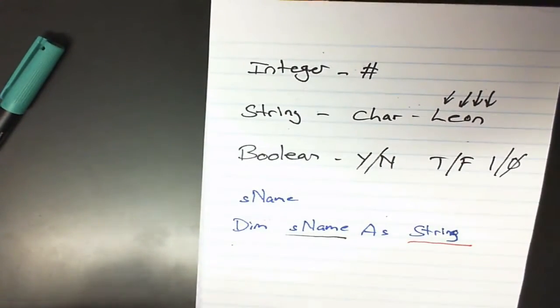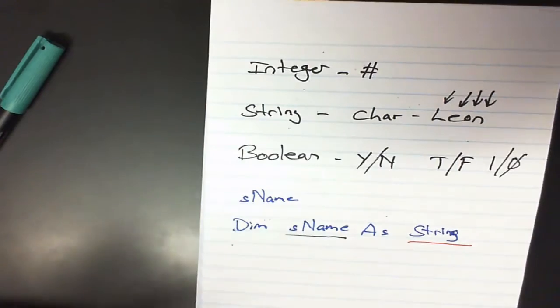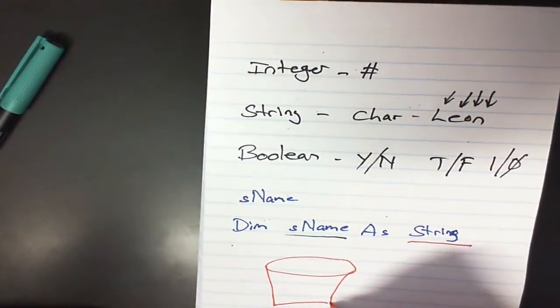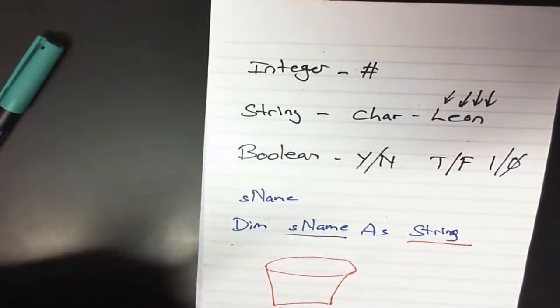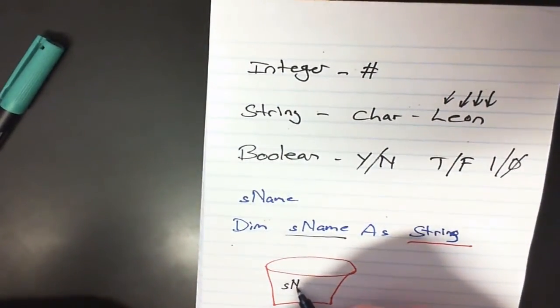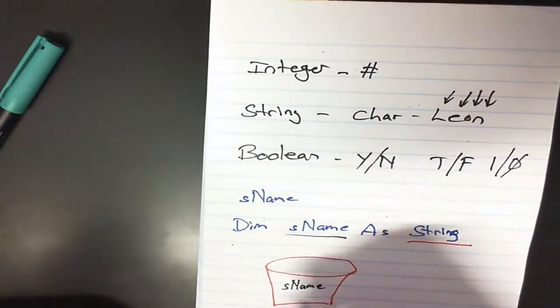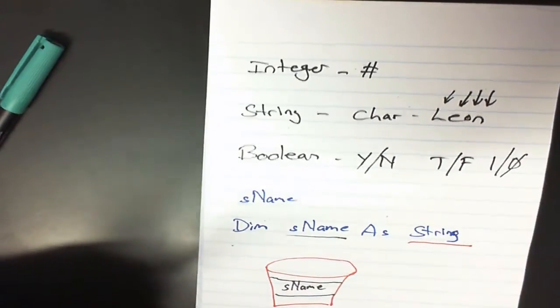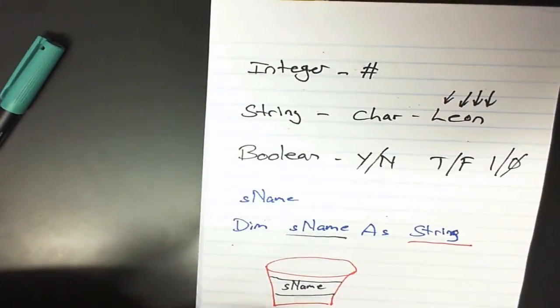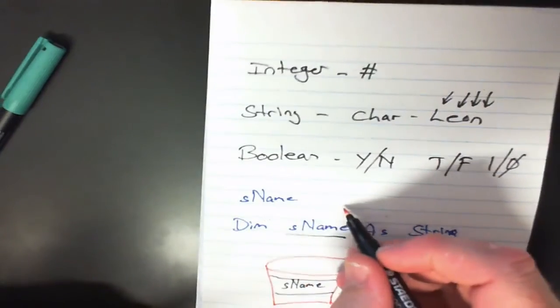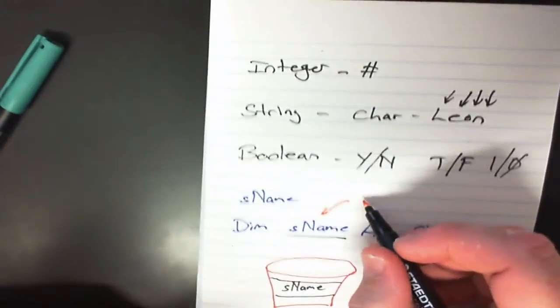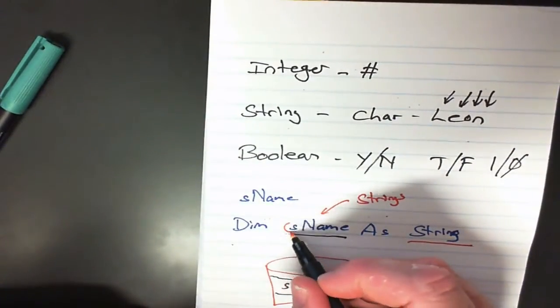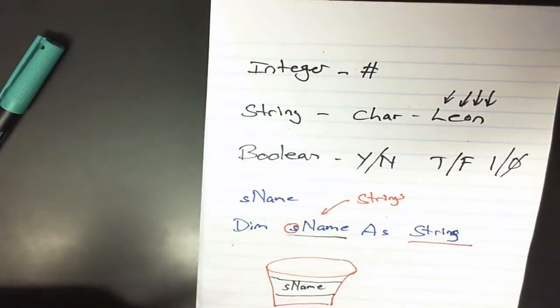And if we use that line of code, it'll actually create us a bucket and that bucket will actually be called sName. Now the reason for the s, the s is Hungarian notation. It's a limitation or developer principle that means that this variable name here contains strings and we know that by the little s at the front.